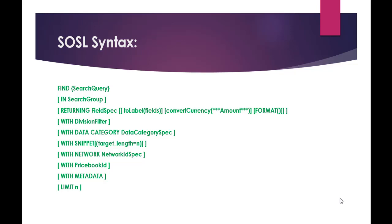The format is the division filter, which you can use when working in multiple divisions. Additional optional clauses include with data category, with snippet, with network ID spec, with price book ID, metadata, etc. You can also limit how many rows you want to return. This is how the SOSL looks like.